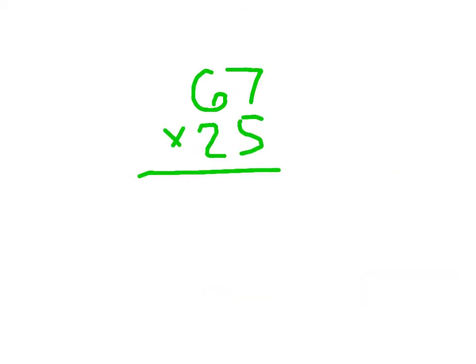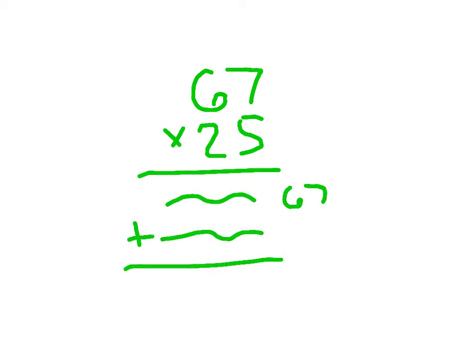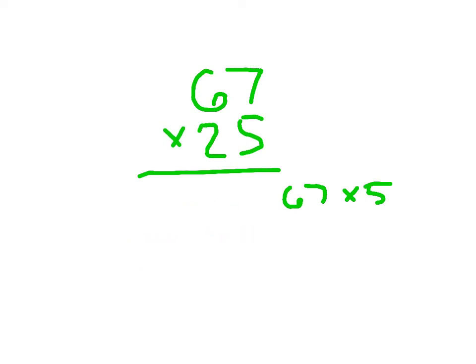We're not going to go through all the steps of writing little squiggly lines for everything, because we don't need to do that when actually solving these problems. We'll just take a look at each of those pieces and multiply them step by step. The reason I showed you that is so you understood where we're placing numbers and why.